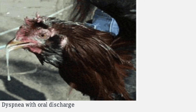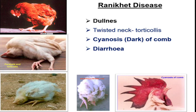Clinically you may observe labored breathing with oral discharge, dullness in the birds, and standing on the hocks or knees. A twisted neck (torticollis) is also seen — paralysis with the head bent backward. The comb becomes dark due to cyanosis, and diarrhea occurs due to enteric inflammation and hemorrhage in the intestinal tract.